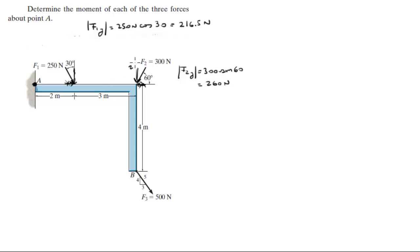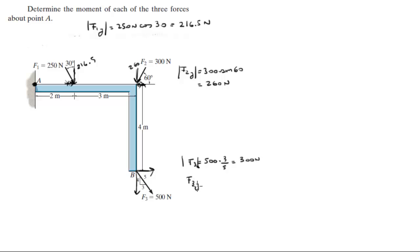Force 3 has an X component and a Y component. The X component of F3 has a magnitude of 500 times 3/5, which is 300 newtons. The Y component of F3 has a magnitude of 500 times 4/5, which gives 400 newtons.